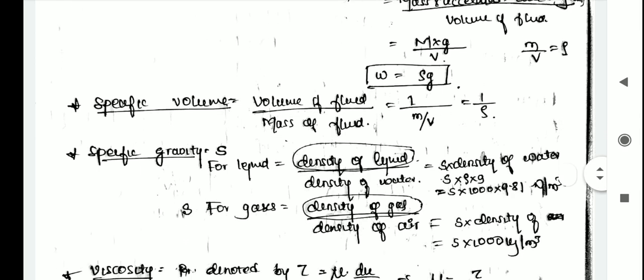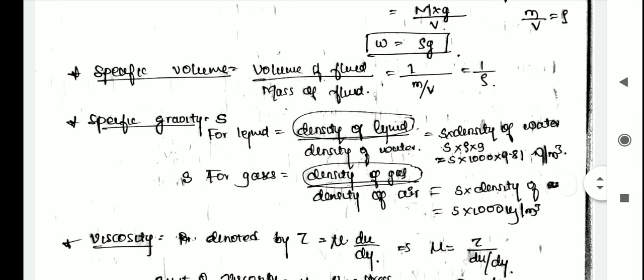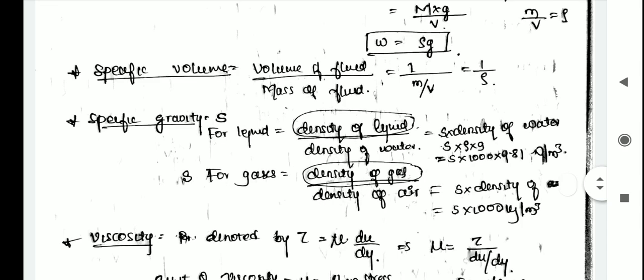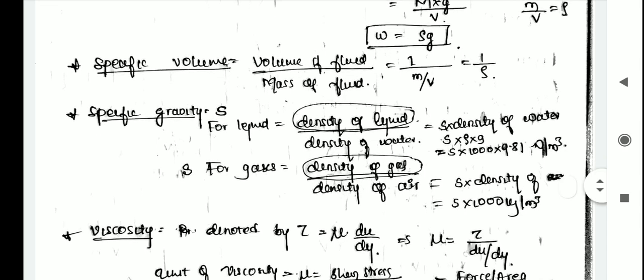Specific volume is the ratio of volume of the fluid to its mass, that is 1 divided by (M/V), which equals 1 by rho. So specific volume is the reciprocal of mass density. It is expressed in meter cube per kg and is commonly applied to gases.